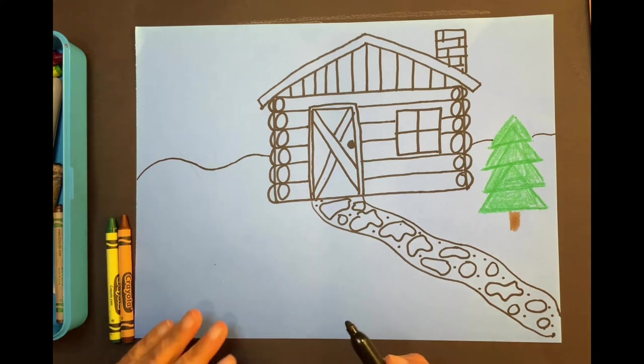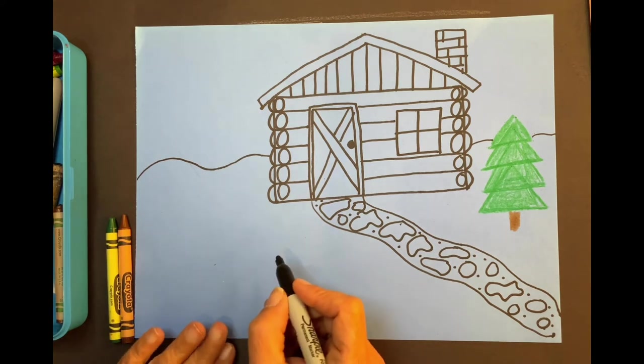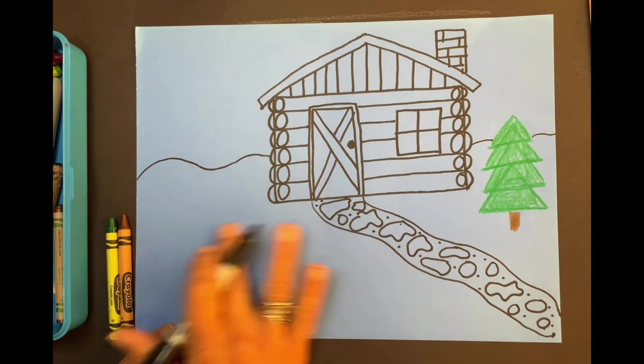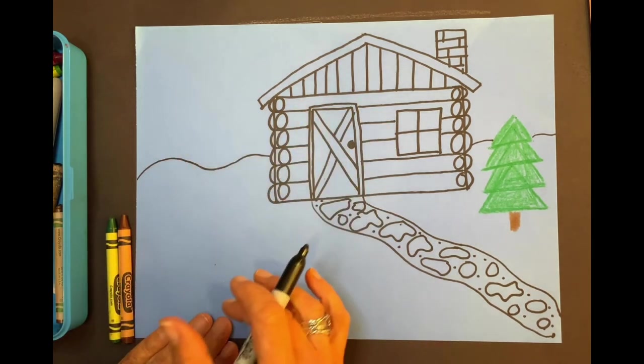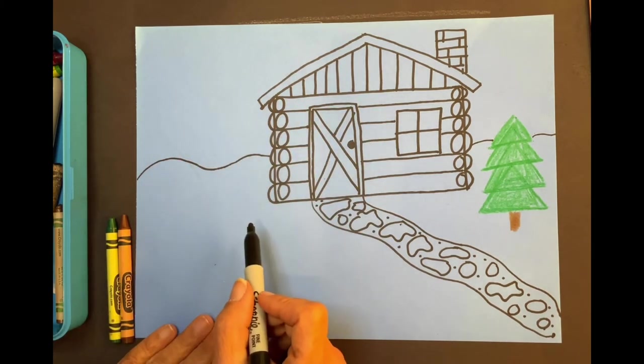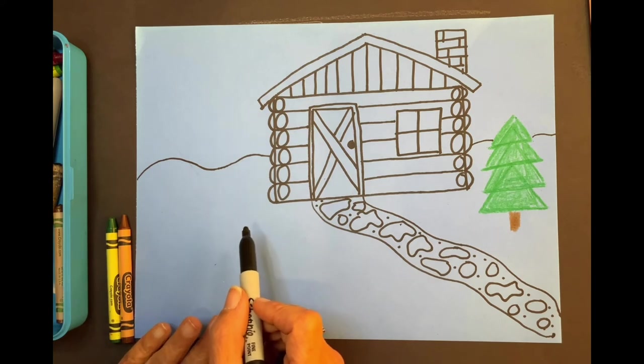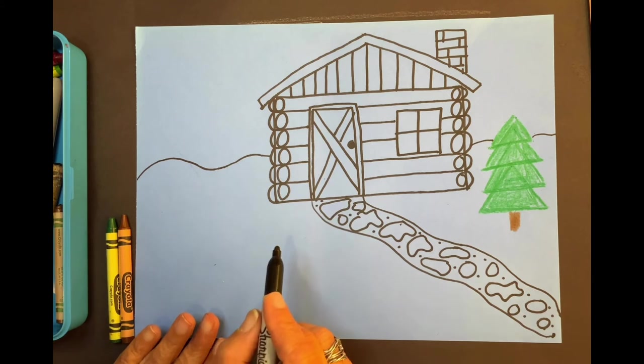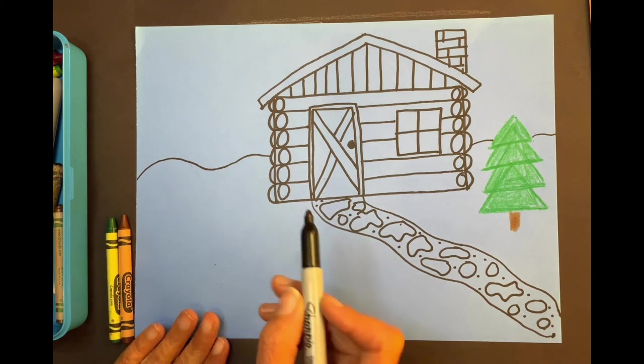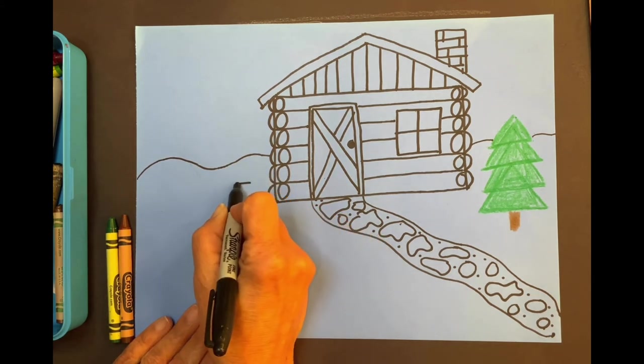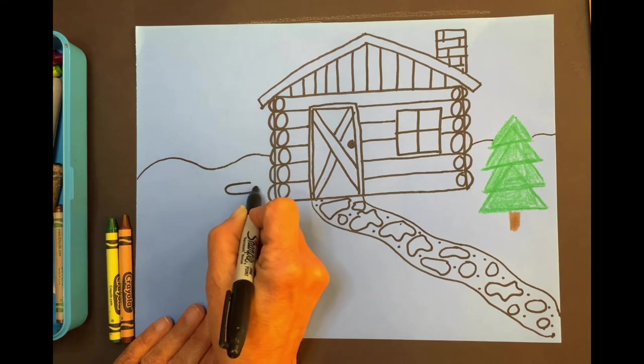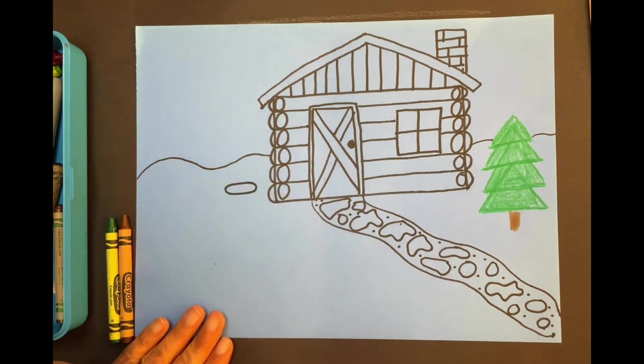Get your black marker or your crayon. I have a little space right here near the cabin where the rain would come down and the barrel would catch it. And then they could use that water for watering their crops or to take a bath in because they did not have running water in their houses. First thing I want you to do is make a flat oval kind of like this. Can you do that?